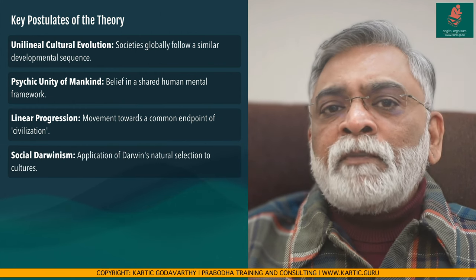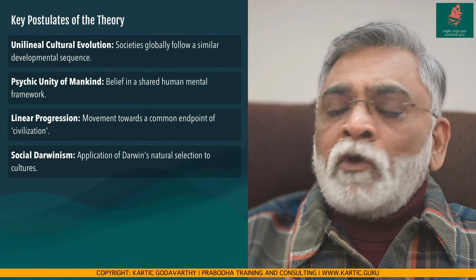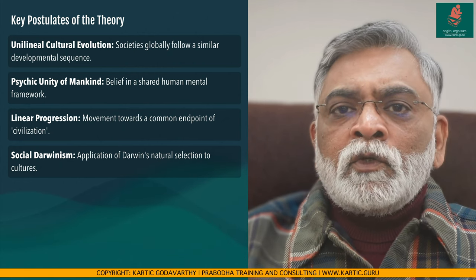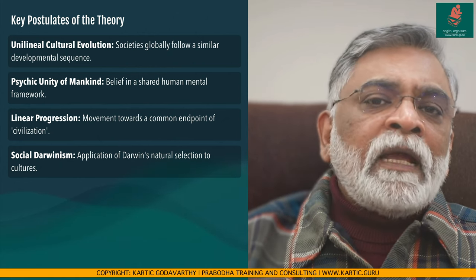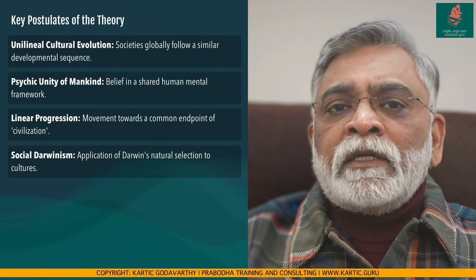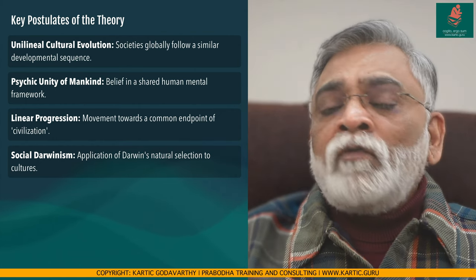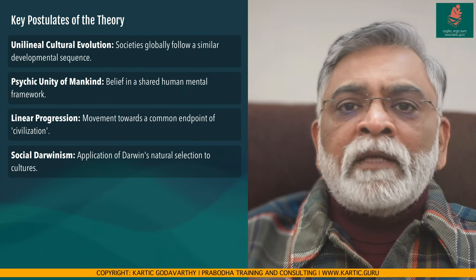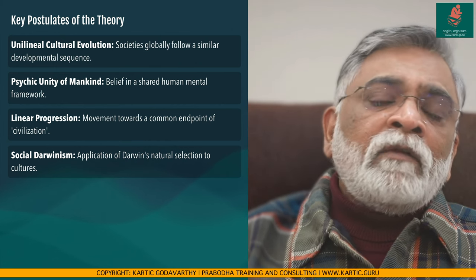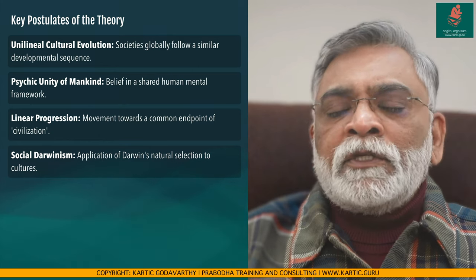Another critical aspect of this theory was the notion of social Darwinism. Drawing inspiration from Charles Darwin's theory of natural selection, social Darwinism applied these ideas to cultures and societies. It suggested that some societies were more fit or advanced than others, often placing Western societies at the apex of this evolutionary ladder. This concept greatly influenced not only anthropology, but also the political and social ideologies of the time.